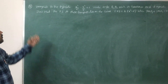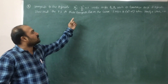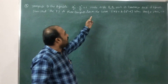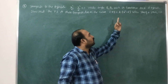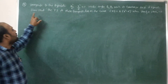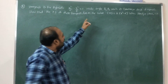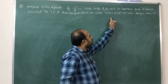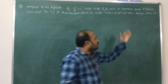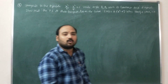Tangents to the hyperbola x²/a² - y²/b² = 1 make angles θ₁ and θ₂ with the transverse axis of the hyperbola. Show that the point of intersection of these tangents lies on the curve 2xy = k(x² - a²) when tan θ₁ + tan θ₂ = k.